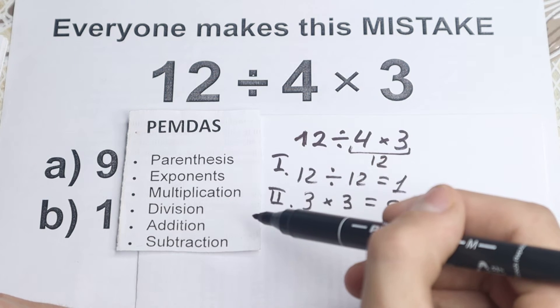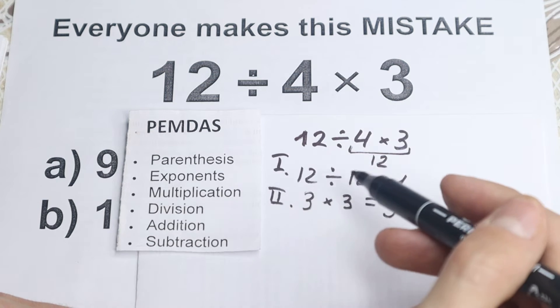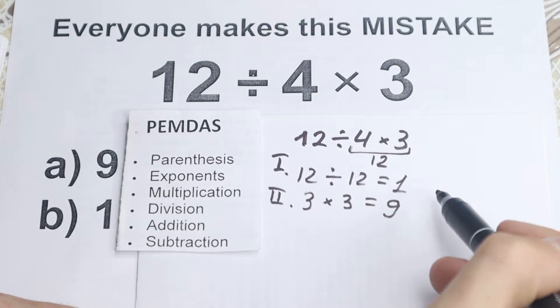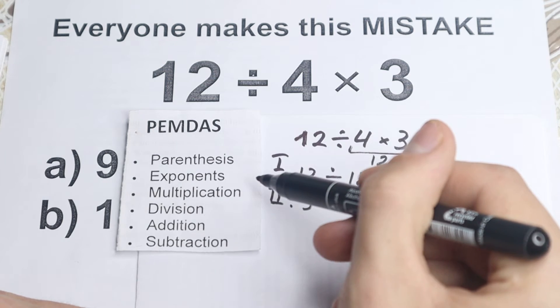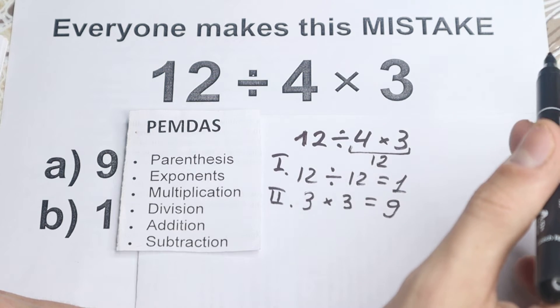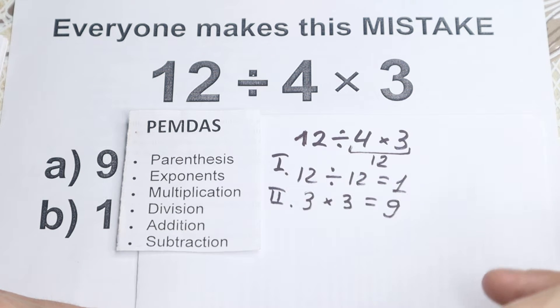This order works from the top to the bottom, so the first step is parentheses. Are there any parentheses right here? No, I don't see any of those, we don't have any parentheses. The second step, we have exponents. Are there any squares, cubes right here? No, I don't see any of those, we skip these two parts.